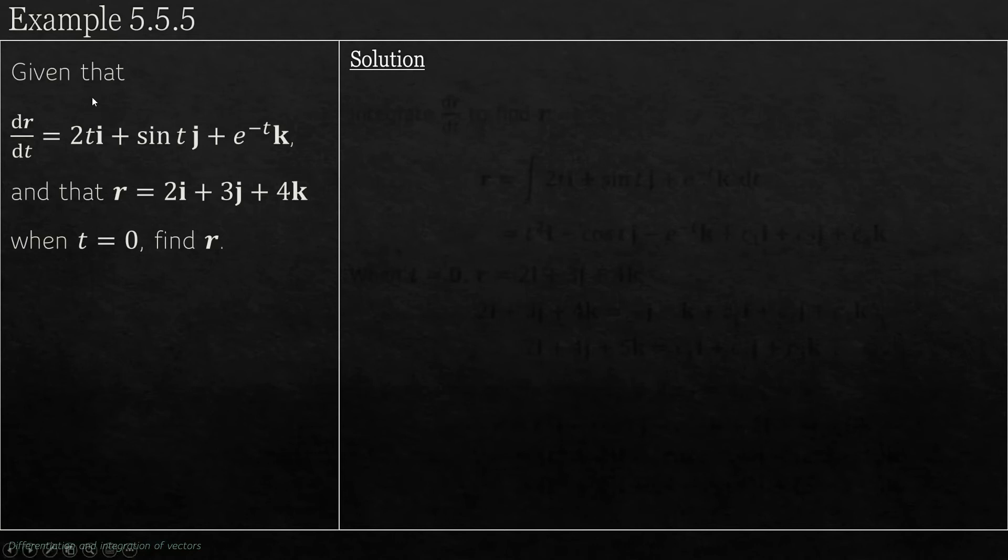In this question we are given that dr/dt, where r is a vector, is 2ti + sin(t)j + e^(-t)k, and that r = 2i + 3j + 4k when t = 0. Find r. So r represents a position vector at time t. We've been told when t was zero, r represented the position 2i + 3j + 4k. The velocity, or dr/dt, is given by this. We need to find an expression for the position vector at any time t.